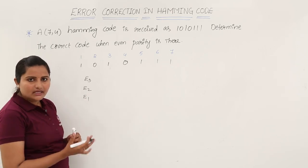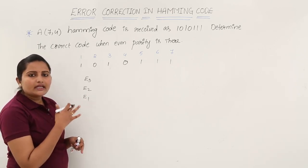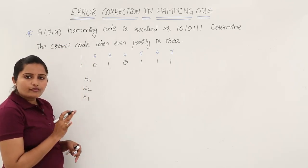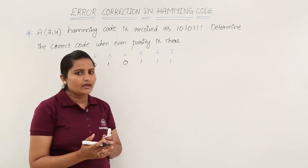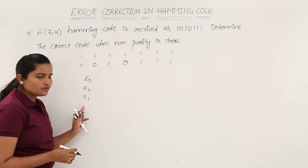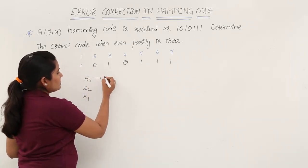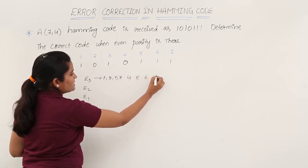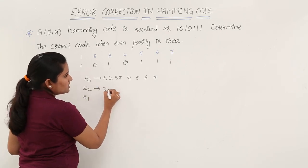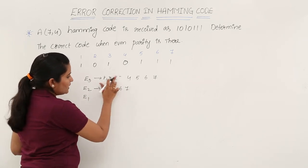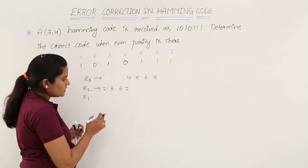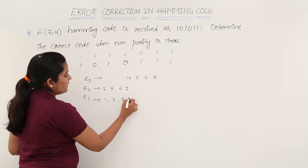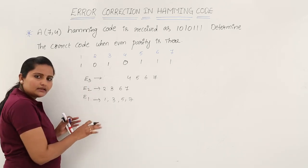The number of error place combinations equals the number of parity bits. For a (7,4) Hamming code, where 7 is the length and 4 is the number of message bits, the number of parity bits is 3. So we have three error places. To get E3, use positions 4, 5, 6, 7 as reference. To get E2, use positions 2, 3, 6, 7. To get E1, use positions 1, 3, 5, 7.